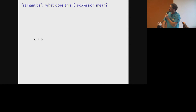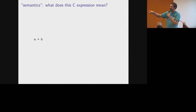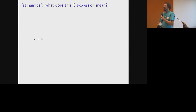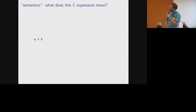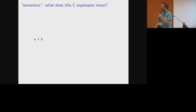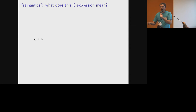So let's talk about semantics-preserving. What does the expression a plus b in a C program actually mean? Anyone want to throw out some answers? Addition, yeah - it depends on the types, that's the key thing. If these are both of type int then it's signed integer addition, probably 32-bit on any platform you're likely to be working with. But if either a or b is a pointer and the other is an integer type, then this is pointer arithmetic.